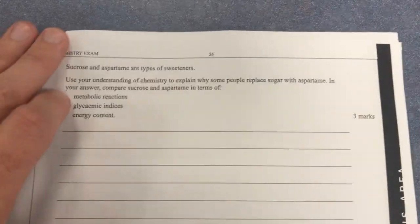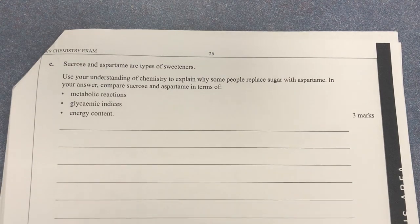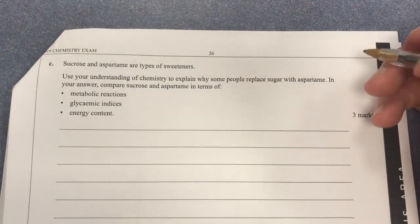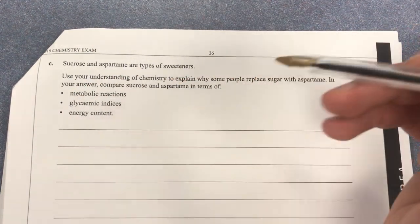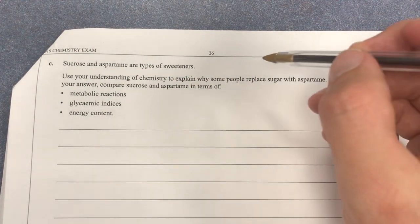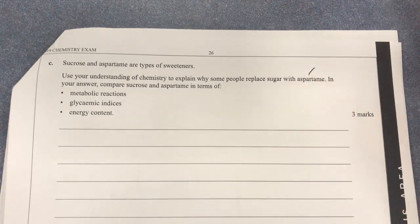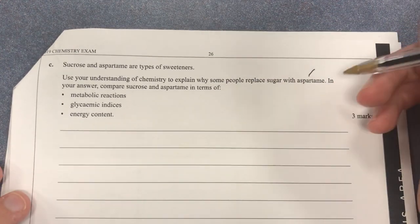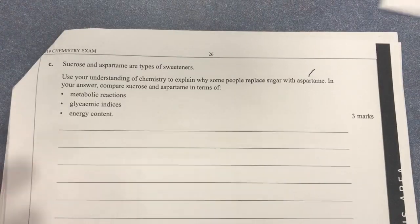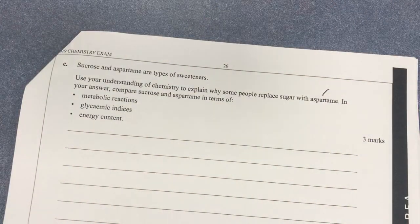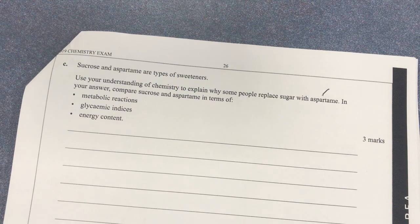Moving to part C: sucrose and aspartame are types of sweeteners. The question asks us to use our understanding of chemistry to explain why some people replace sugar with aspartame. We need to talk about the metabolic reactions that occur when both undergo digestion, as well as glycemic index (GI) and energy content.